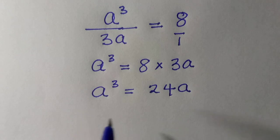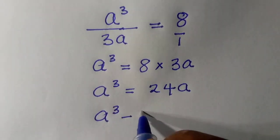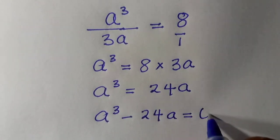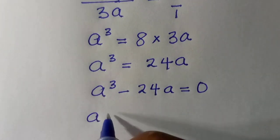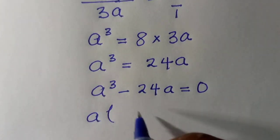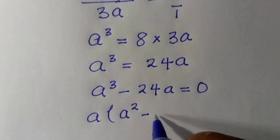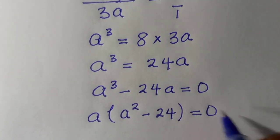Then we have to take the whole of this here, so that we have a to the power of 3 minus 24a equals 0. So having this, we factor out a, then we have a. When we divide this one by a, we are left with a squared minus 24, everything equals 0.